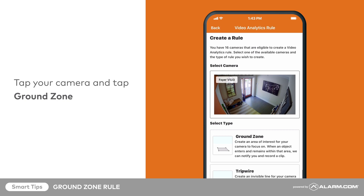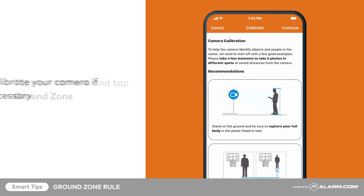Tap the camera you would like to use and tap Ground Zone. If you have not created a video analytics rule on this camera previously, you must first calibrate the camera. Follow the on-screen steps on the mobile app, or check out the Smart Tip video focused on video analytics calibration.